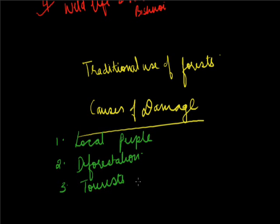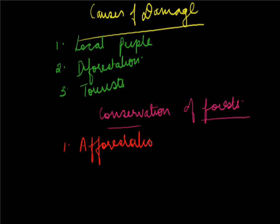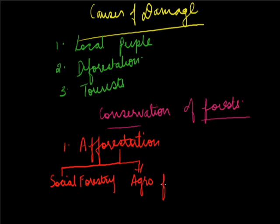Conservation of forests includes the following methods. The first method is afforestation. It is a practice of transforming an area into forest where forests have not grown there. It involves three types of forestry programs: first is social forestry, second is agroforestry, and third is urban forestry.